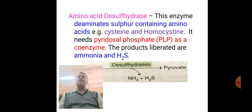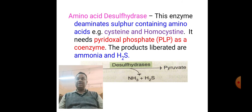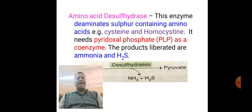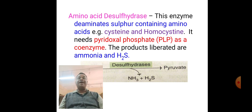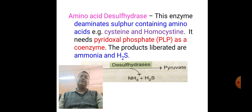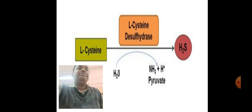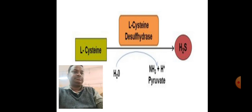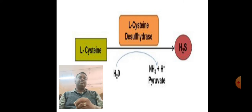The second group of non-oxidative deaminases includes amino acid desulfhydrases. These enzymes remove the amino group from amino acids that contain sulfur groups. Examples of sulfur-containing amino acids are cysteine and homocysteine. Desulfhydrases also make use of PLP as a coenzyme, and the end products formed are ammonia and hydrogen sulfide. The picture depicts how desulfhydrases help in the removal of both the sulfur group and the ammonia group.